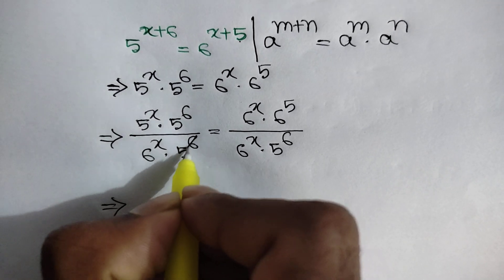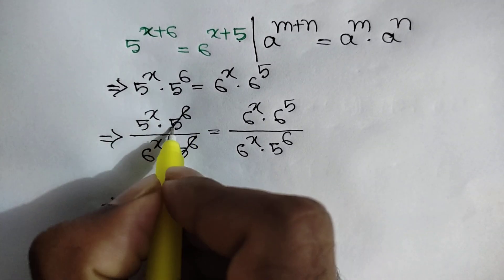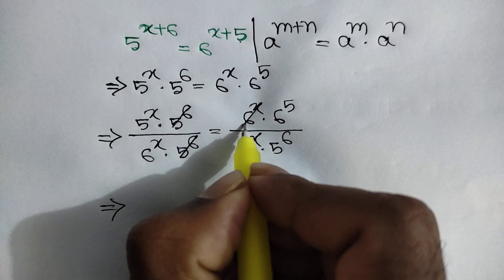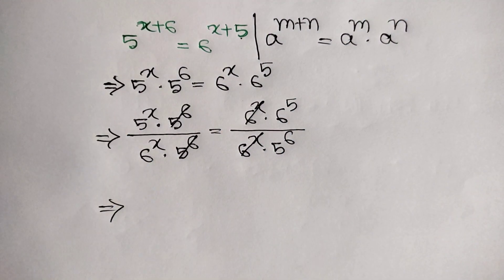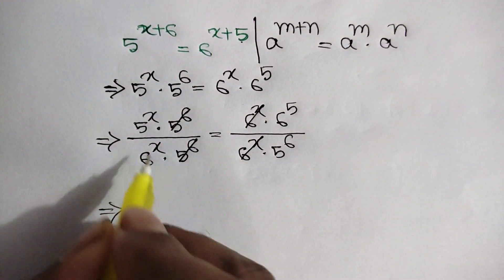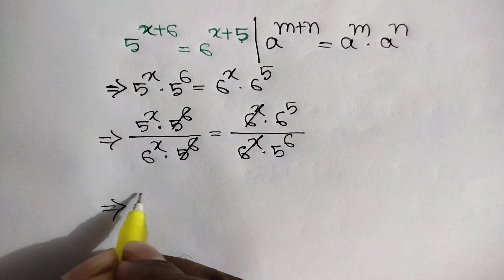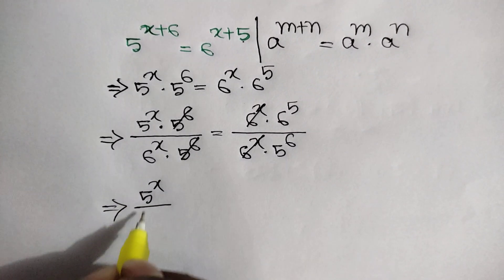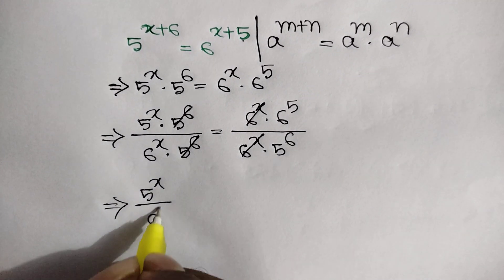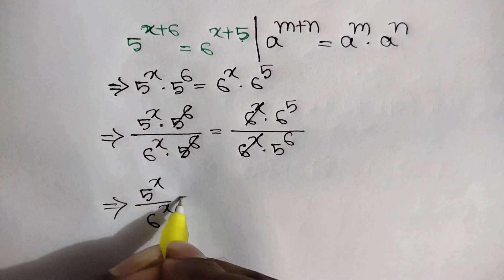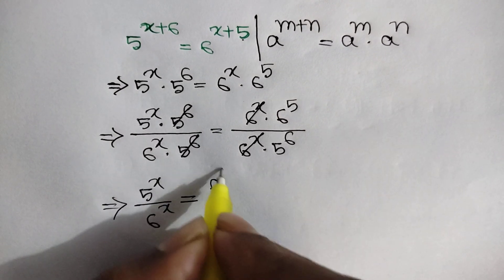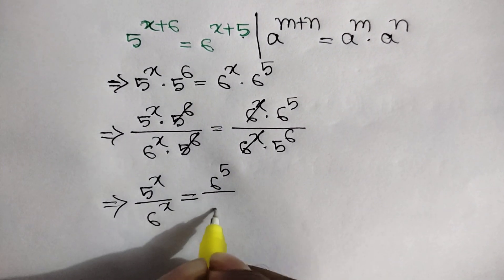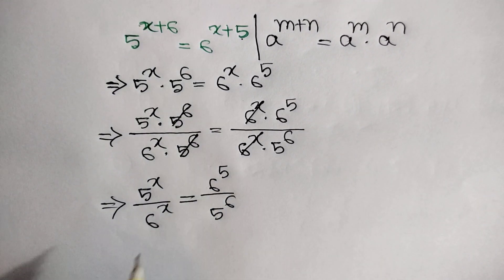Here 5 to the power 6 cancels out with 5 to the power 6, and 6 to the power x cancels out with 6 to the power x. So we can write: 5 to the power x over 6 to the power x is equal to 6 to the power 5 over 5 to the power 6.